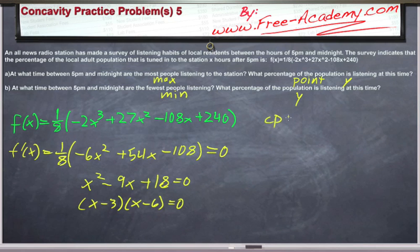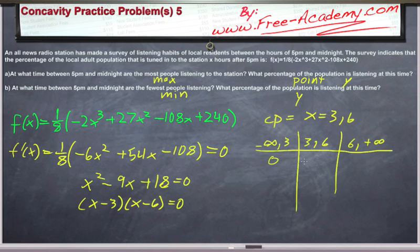So we have critical points occurring at x equals positive 3 and positive 6. So let's set up a table, negative infinity to 3, 3 to 6, and 6 to positive infinity. Let's pick some test values, say 0, 4, and 10, and then let's plug them in to see what we get out of it.